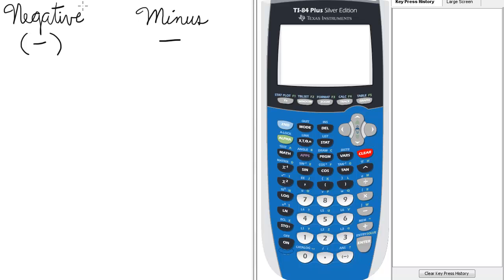Think of the negative sign as an adjective denoting the sign of a number. The negative sign is located in the bottom right hand portion of the keypad among the white keys and it's enclosed by parentheses.